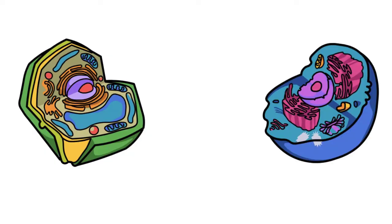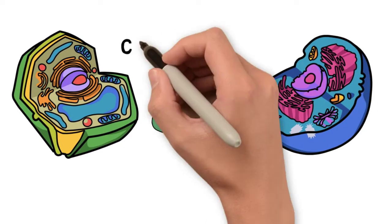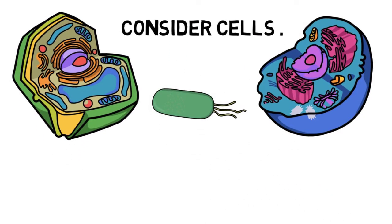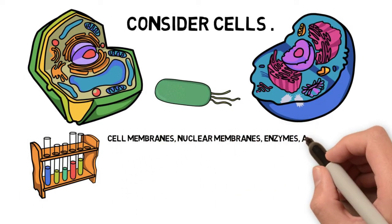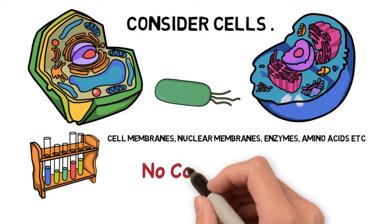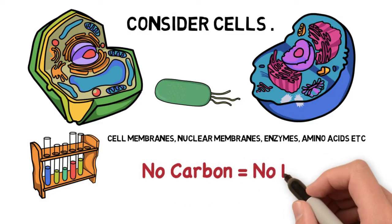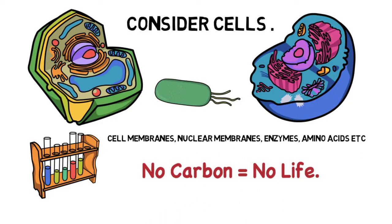So let's consider cells, the most simplest or basic unit of life. Think about what goes into making a cell, all of those particular features, and think about the molecules that are involved in making those membranes, the enzymes, the amino acids, the ribosomes. They all contain carbon.